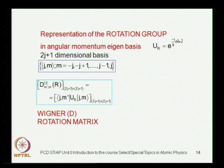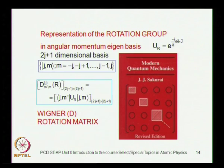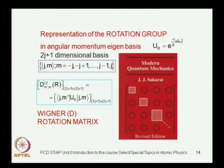We will have a fairly extensive discussion on the rotation group, because angular momentum is the generator of rotations. We will discuss the Wigner rotation matrices, which appear on the cover page of Sakurai's book. These are important in all aspects of quantum mechanics — not just atomic physics but also nuclear physics and many other branches. They are the matrix elements of the rotation operator in angular momentum states, and we will study their properties.